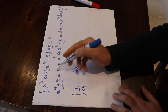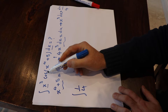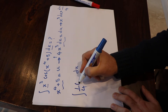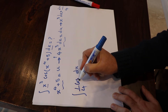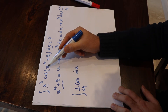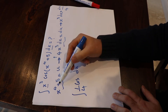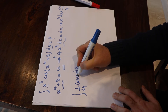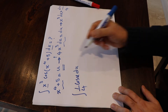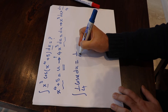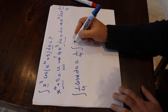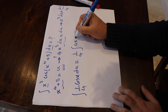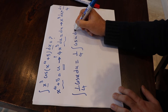And instead of cosine of x⁴ plus 5, I write cosine u. So this is basically equal to 1 divided by 4, times the integral of cosine u du.